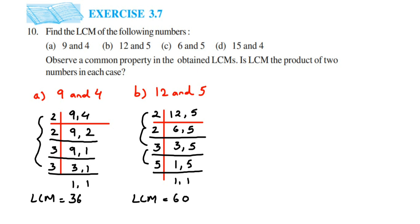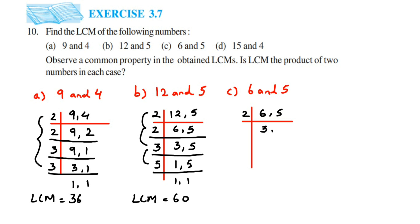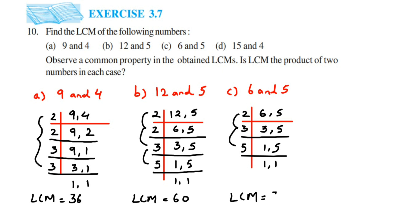Next question: LCM of 6 and 5. They don't share a common table, so start with 2: 2×3=6, and 5 carries. Then 3×1=3, and 5 carries. Then 5×1=5. LCM = 2×3×5: 2×3=6, 6×5=30. So the LCM of 6 and 5 is 30.